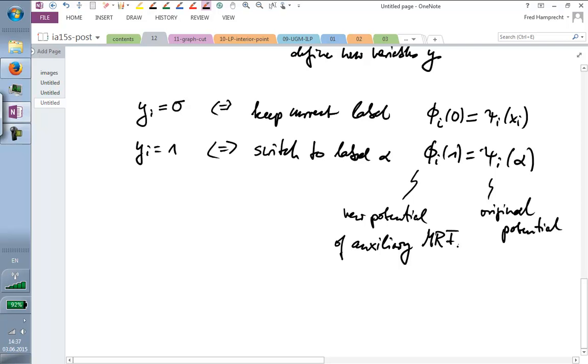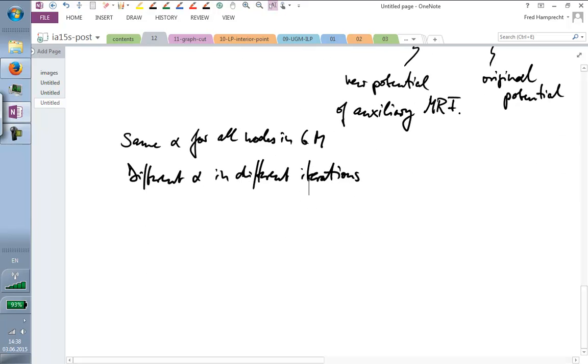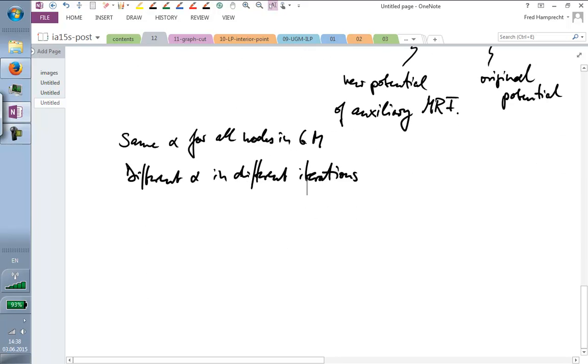Now, we need to make this decision of do we want to stick with the old solution or switch to a new one. And this is a problem that we again set up as a Markov random field. So, we set up a new problem. We are given some current labeling x and we are given potentials psi. Then we define a set of new variables y. Binary variables. I either set it to 0.